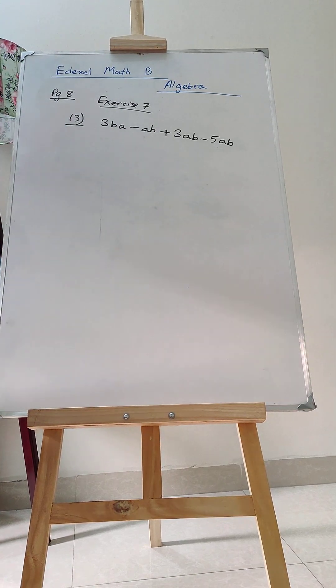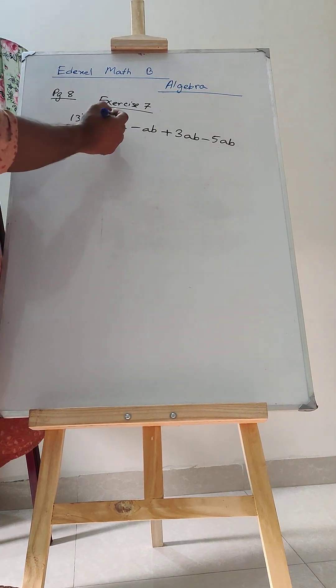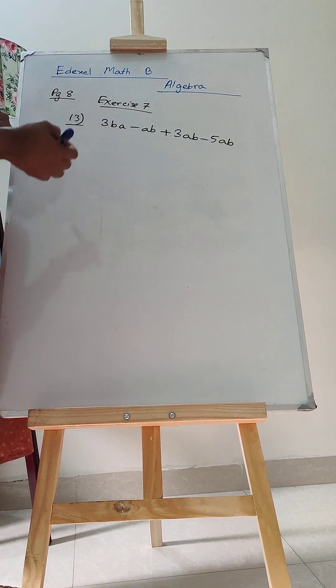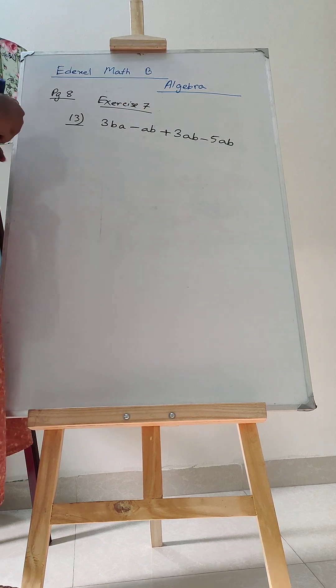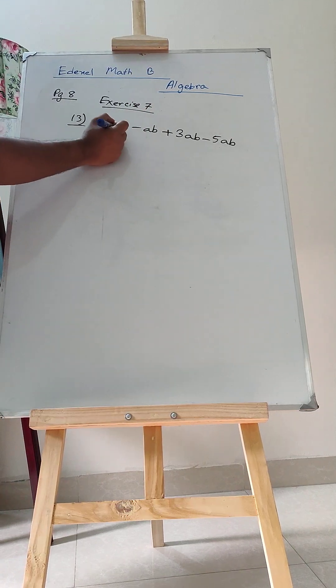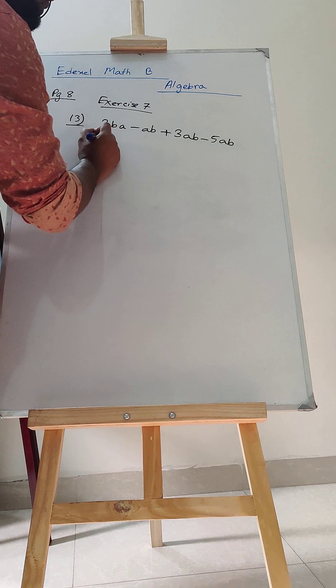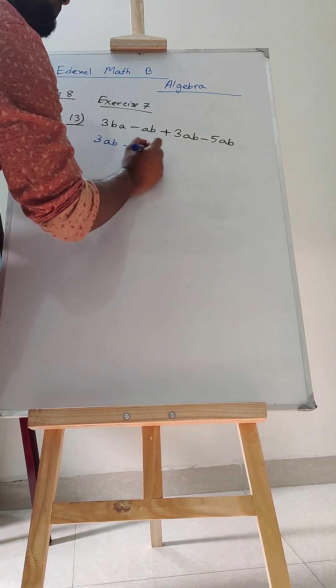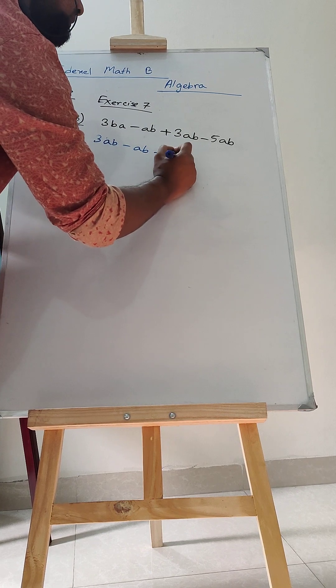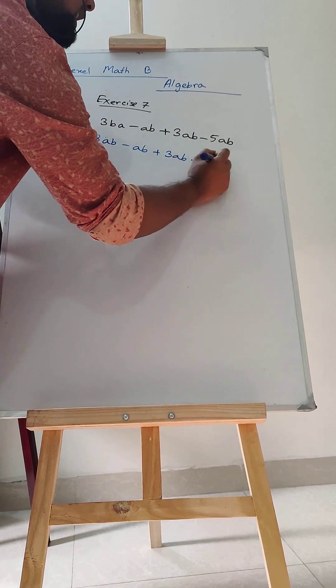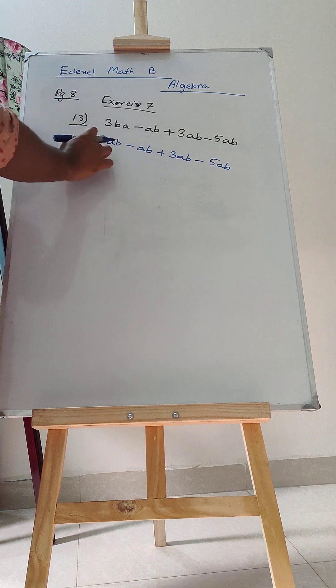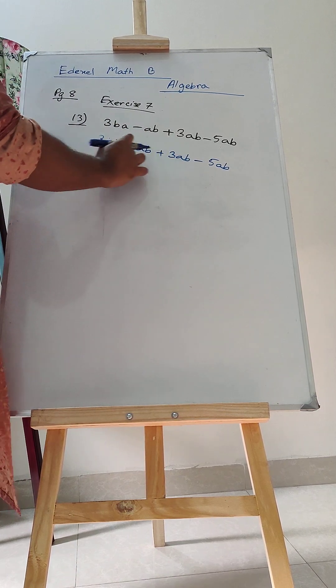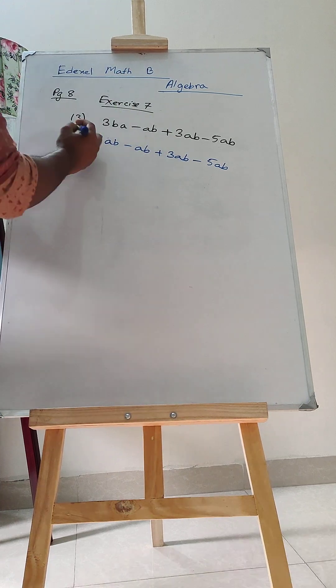So, now you tell me. 3BA, AB, AB, AB. All these are ABs. So, instead of writing 3BA, you can convert it and you can write it 3AB minus AB plus 3AB minus 5AB. Now, you write the plus sign ones together and minus sign ones together. It will be easier to do.